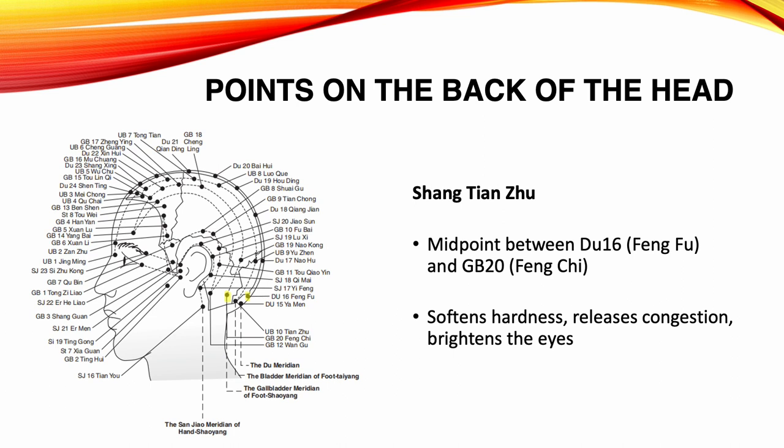Shung Tian Chu. Location: midpoint between Du 16 and Gallbladder 20. Functions: softens hardness, releases congestion, brightens the eyes. Indications: treats hyperthyroid conditions.